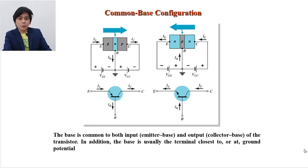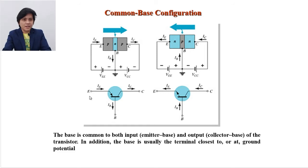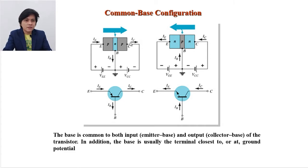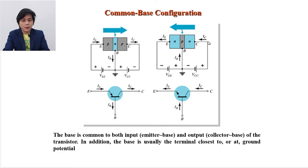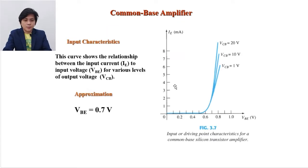Let's start with the common base configuration. As you can see on the diagram on the screen, the base is connected in between the emitter and the collector. When we say common base, that only means that the base is not used either as an input or an output terminal. For this configuration, the input is at the emitter while the output is at the collector, but it depends on the type of BJT used. For PNP, the output is on the collector while the input is on the emitter; for NPN, the input is on the collector and the output is on the emitter — that depends on the direction of the current.